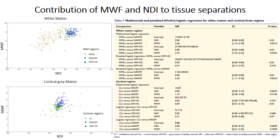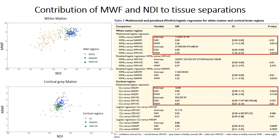Then, because of the potential myelin sensitivity of NDI, we modeled NDI with myelin water fraction using a multinomial logistic regression to investigate to what extent NDI and myelin water fraction could explain the difference between three tissue types: lesion versus normal appearing tissue versus healthy tissue. Our results showed that in white matter, both myelin water fraction and NDI could explain to a certain extent the difference between the three tissue types, but NDI appears to separate the three tissue types better.